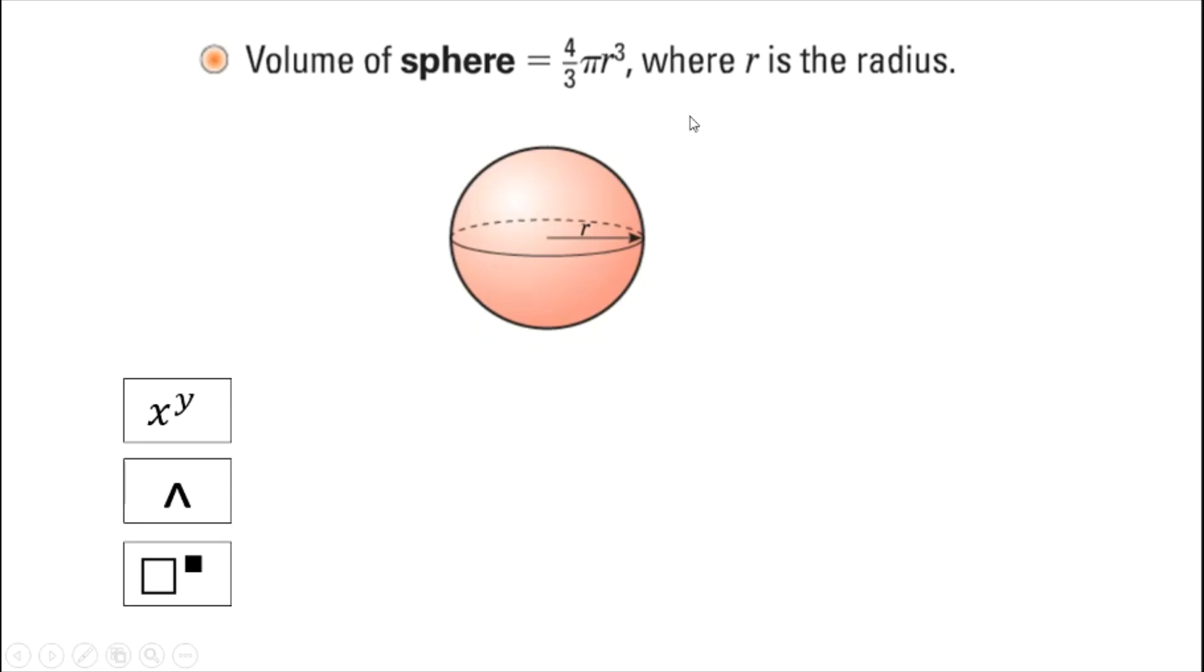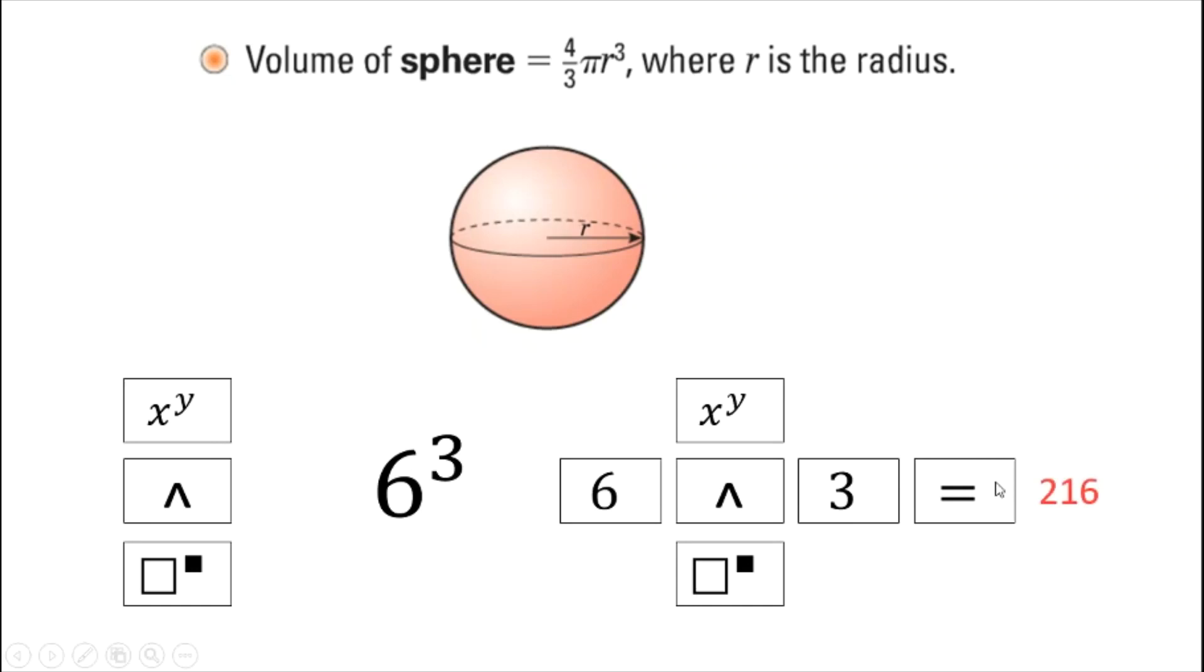Just so you're aware, if you're using a scientific calculator to get a power like this cubed here, you're looking for a button like one of these three, depending on the make and model of your calculator. For example, if you want to do 6 to the power of 3 or 6 cubed, you'd press 6, one of those buttons, 3, equals, and it should give you 216.